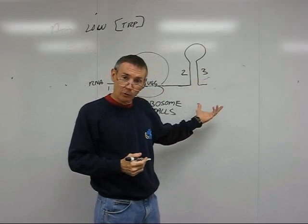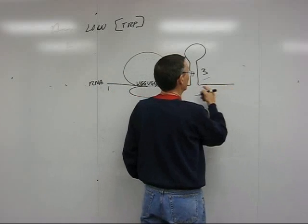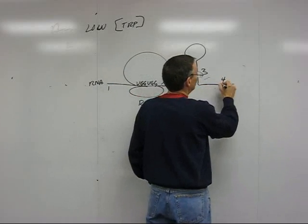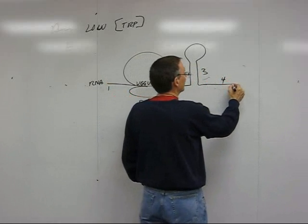2 and 3, although this forms a stem loop, that's not an intrinsic terminator of transcription. What follows 2 and 3? Region 4. Not region U's. This is not a good thing to break off of the template.